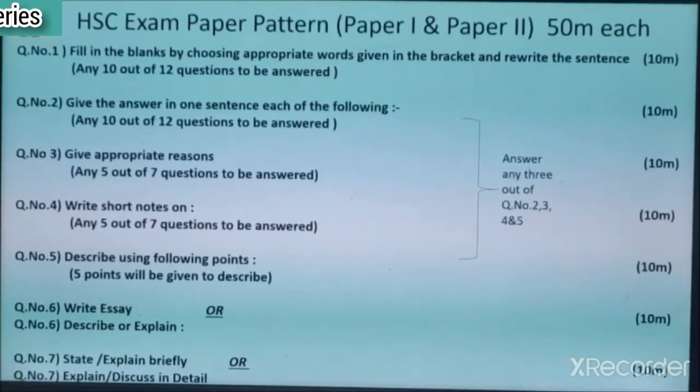Question number 7 is state or explain briefly, or explain or discuss in detail. This consists of 10 marks. Now between questions 6 and 7, you have to choose only one out of four. You have to choose only one. Don't be confused about questions 6 and 7, but you have to solve any one out of 4 options. Either question number 6 or question number 7, you have to choose any one for 10 marks.